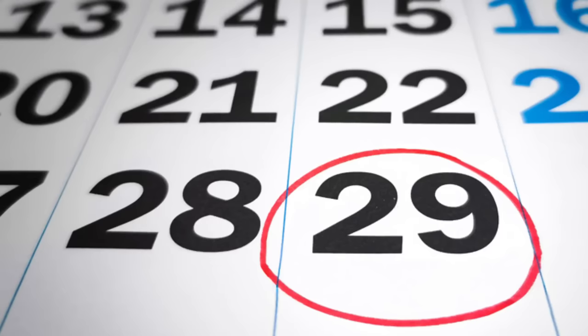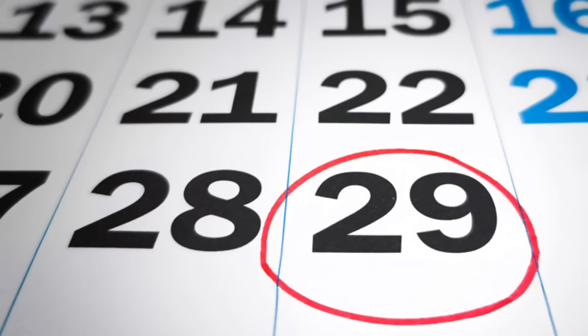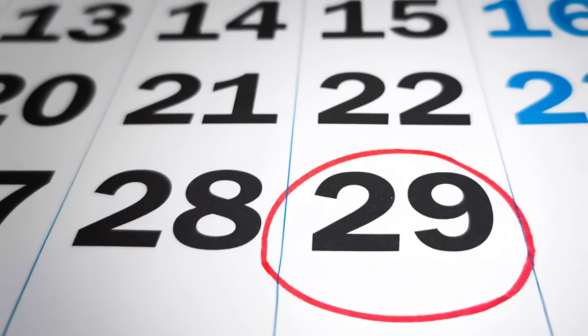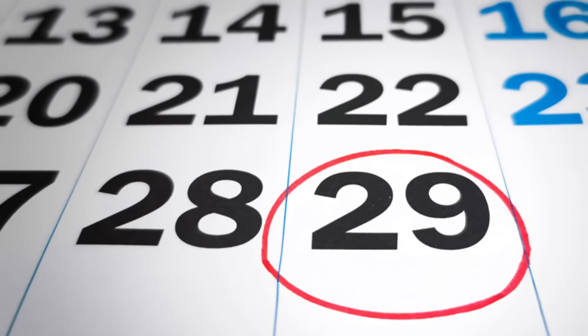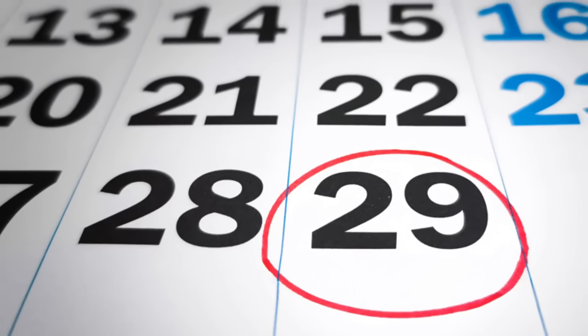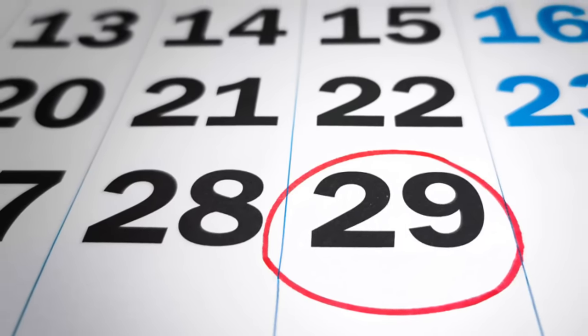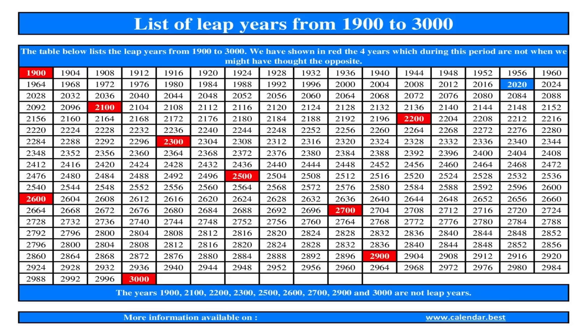Then of course there's leap years, which isn't as simple as just adding an extra day to February every four years, because every century you have to skip a leap year. Otherwise we would be getting a day ahead every century — unless the century is divisible by four, in which case you add a leap year to then prevent us from falling behind every 400 years.